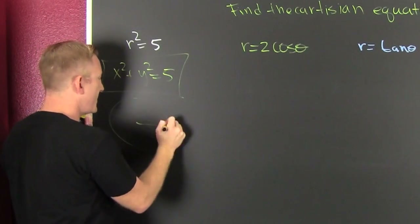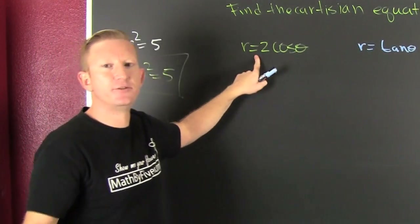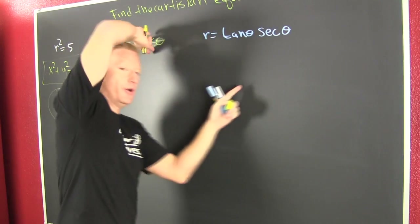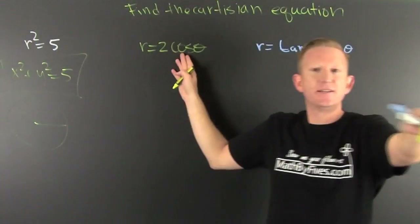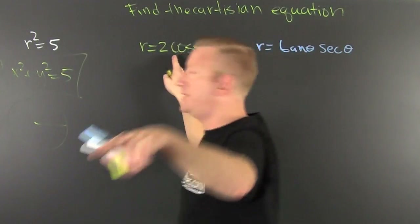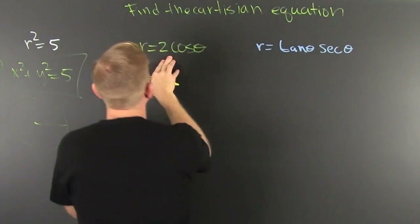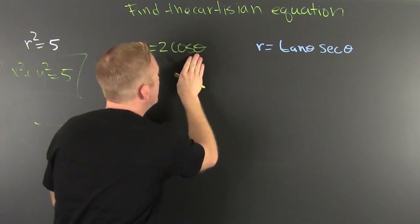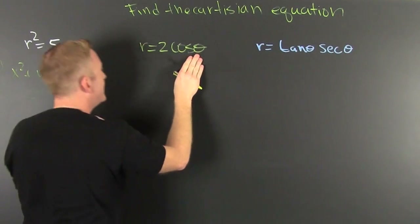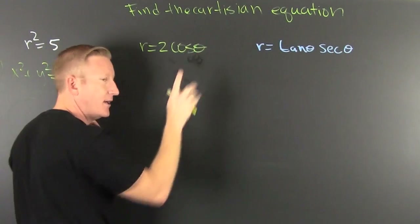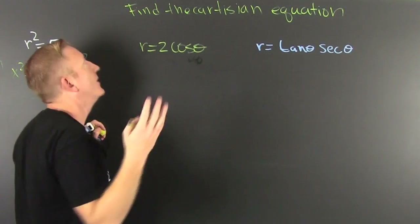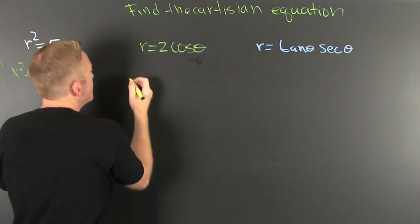We still have two more examples. Let's go intermediate with this one. I have r = 2·cosθ. Now what? x = r·cosθ — thank you.